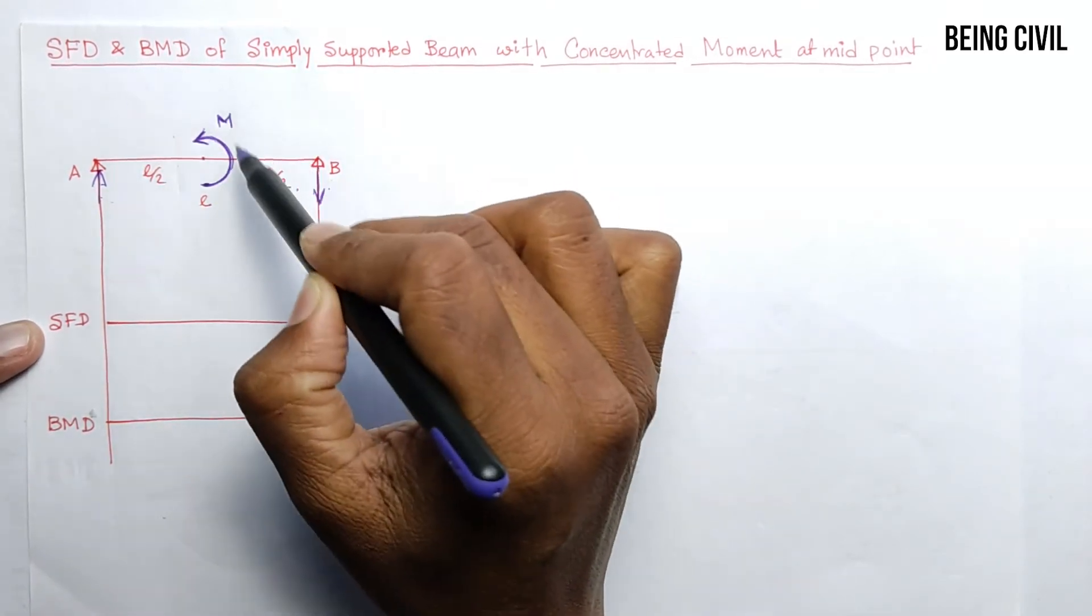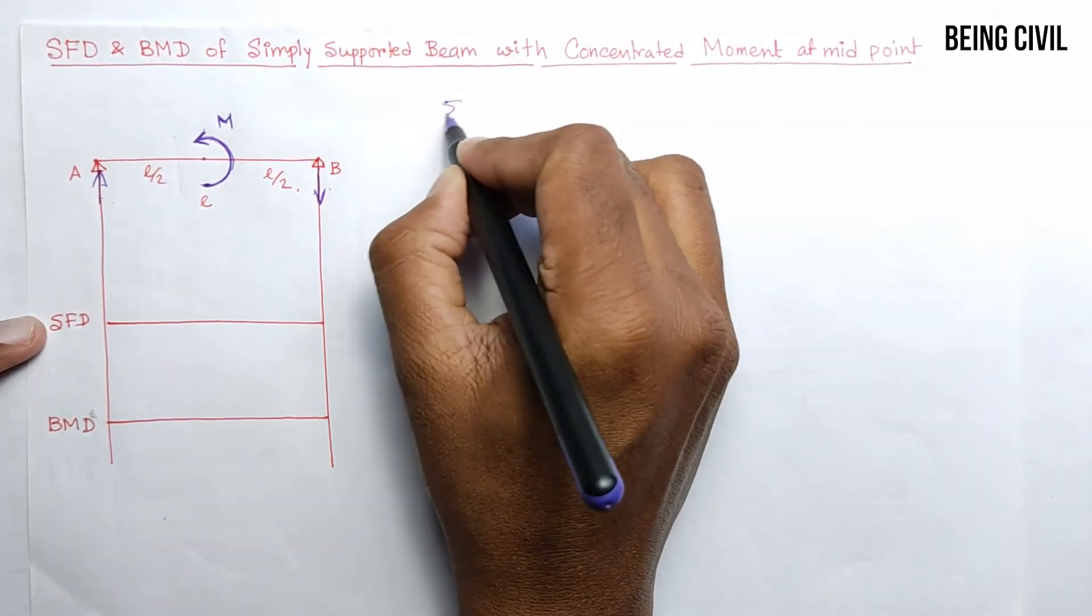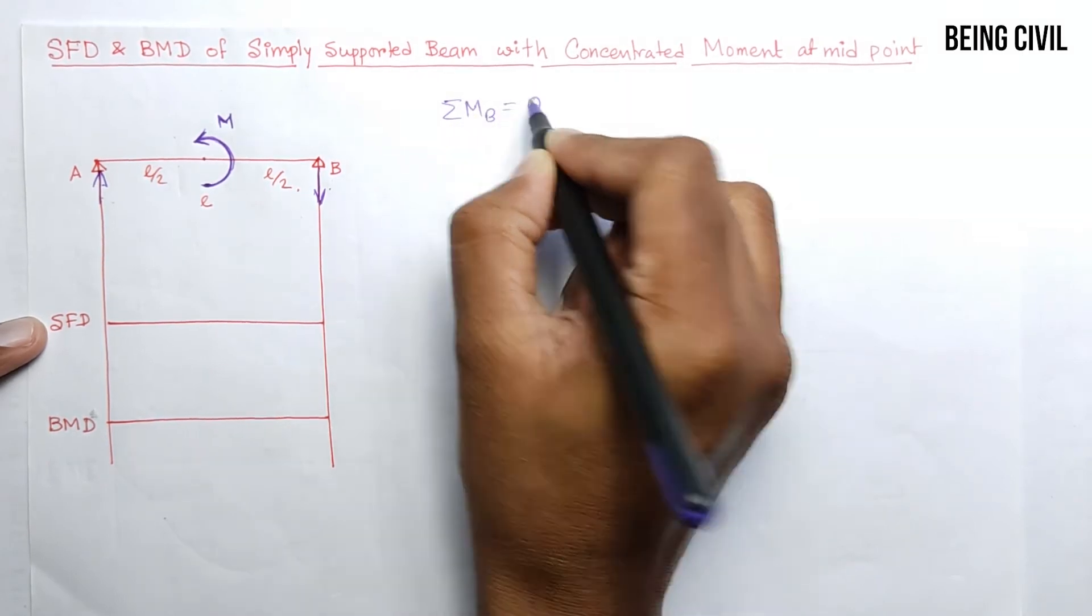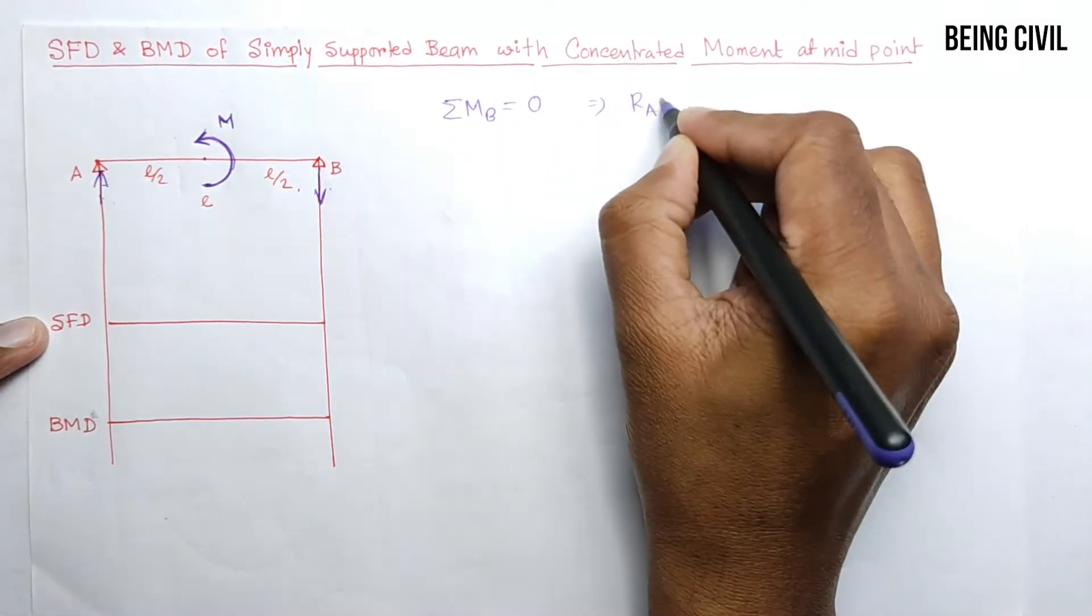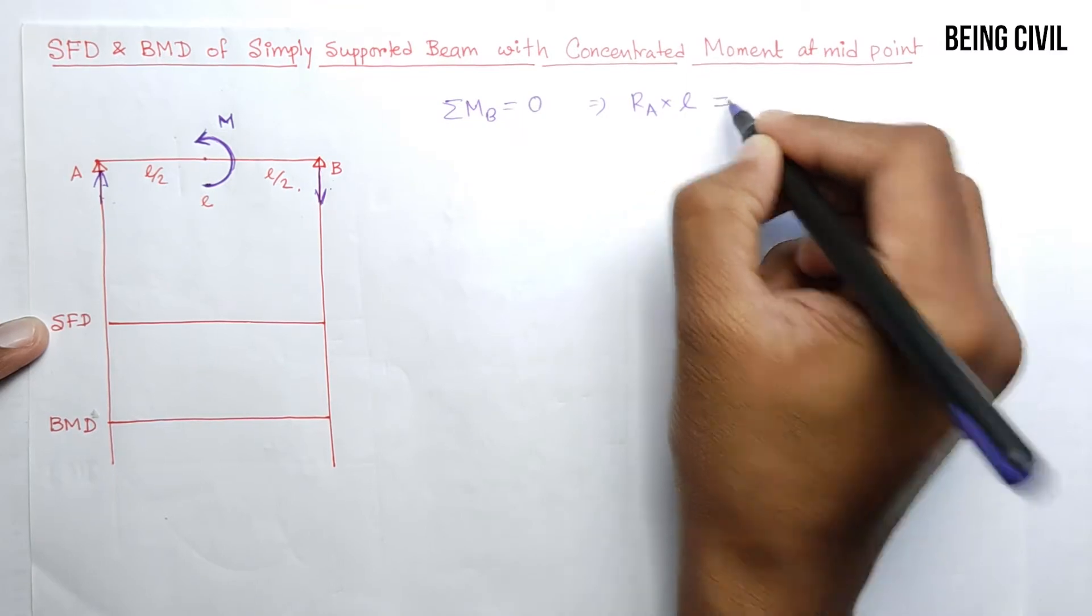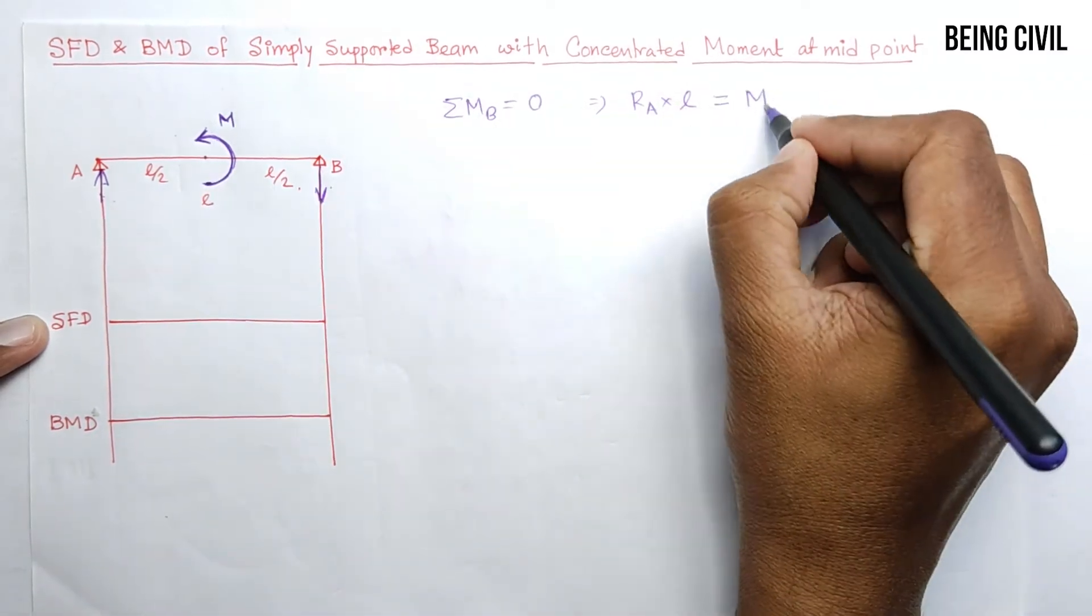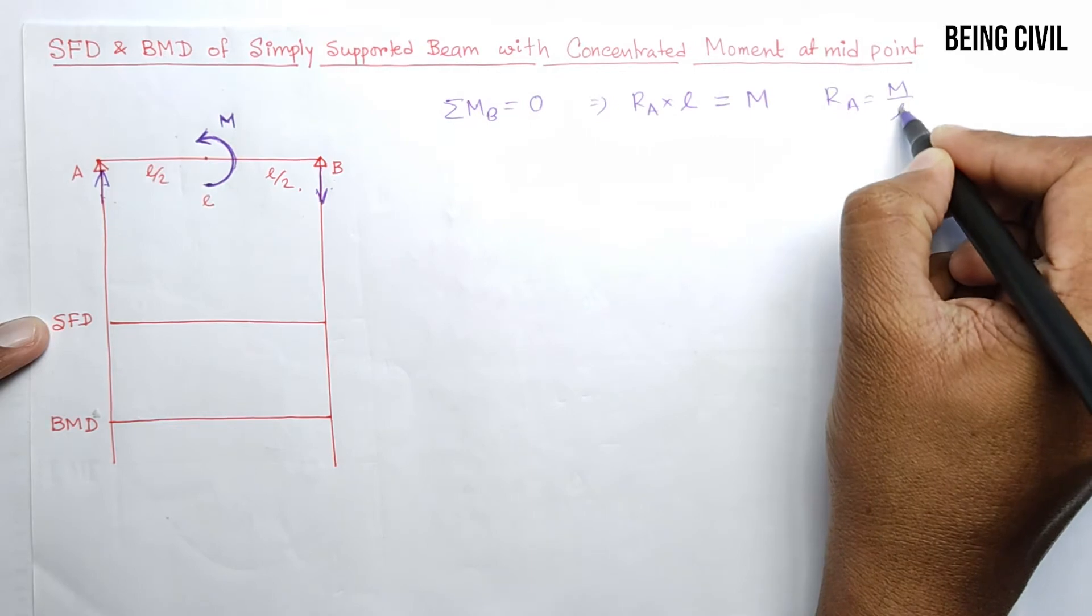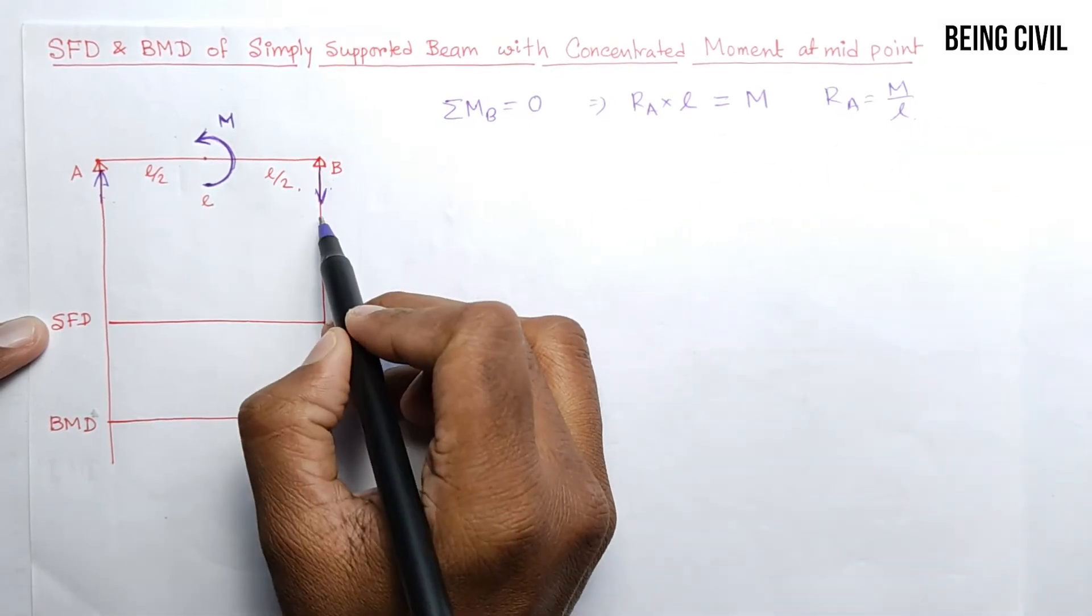Take summation of moment about point B. You get RA into the length L will be equal to this moment, so RA is M/L. Similarly, RB will be of same magnitude but it will be downward.